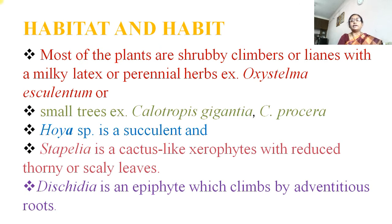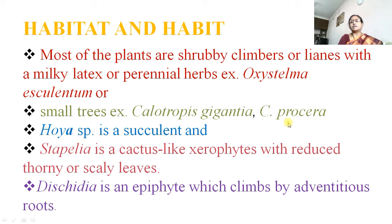Habitat and habit: most of the plants are shrubby climbers or lianas with milky latex, or perennial herbs — example Oxystelma esculentum — or small trees like Calotropis gigantea and Calotropis procera. Hoya species is succulent and Stapelia is a cactus-like xerophyte with reduced thorn or scaly leaves.